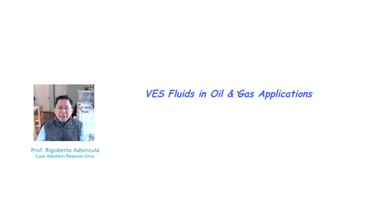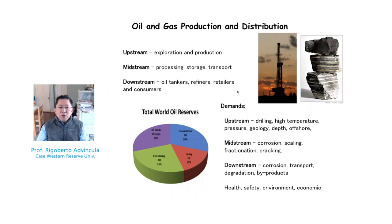Let us talk about viscoelastic surfactants as observed in oil field chemistry applications. The petroleum industry depends on the upstream extraction of oil and gas. What we call refining, chemical cracking, is part of the downstream process. Viscoelastic surfactants are very important for the extraction or upstream side. For hard-to-reach oil, tertiary recovery involves a procedure called EOR — Enhanced Oil Recovery.